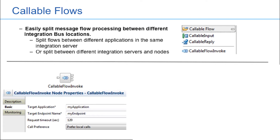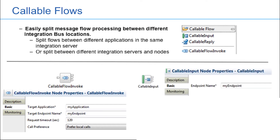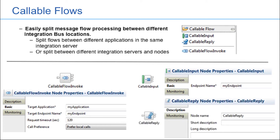The Endpoint property identifies a specific Callable Flow Input node which is to be invoked. The Callable Flow Input node is used in the flow which is being invoked. The Callable Flow Reply node is used at the end of the flow being invoked in order to return data back to the original flow.